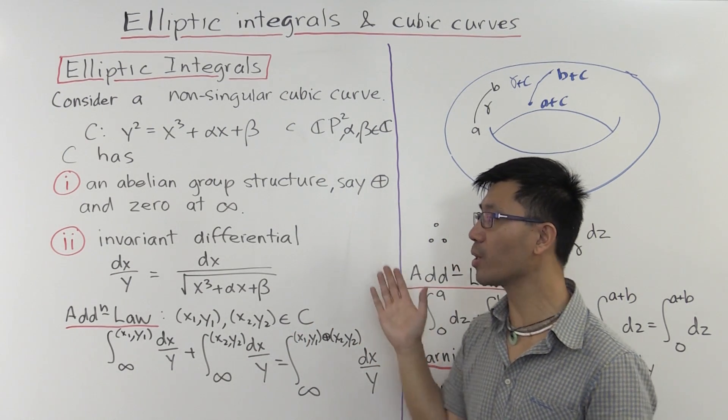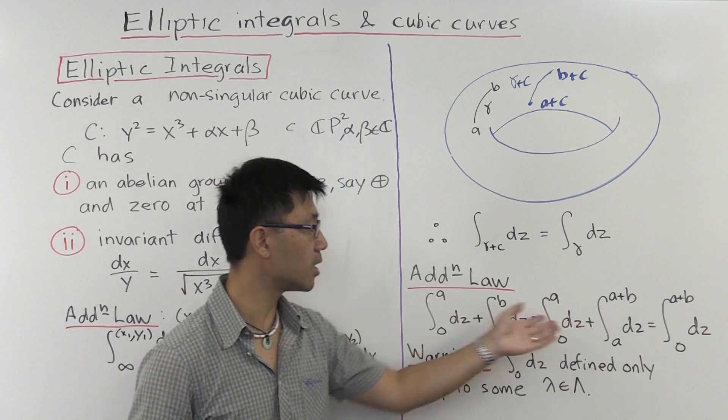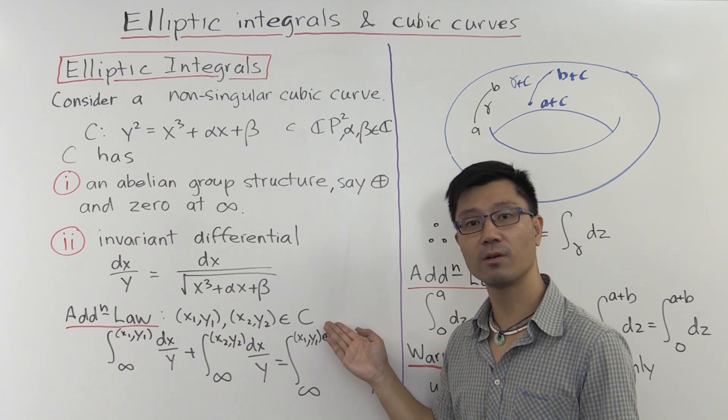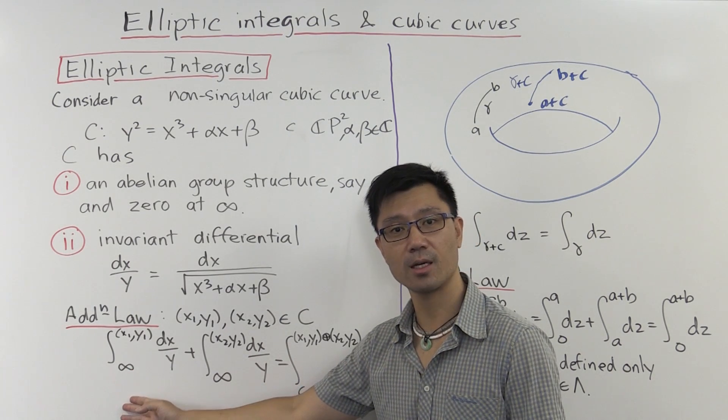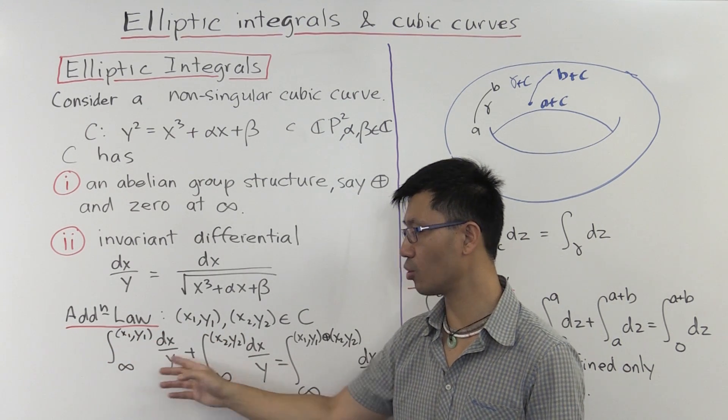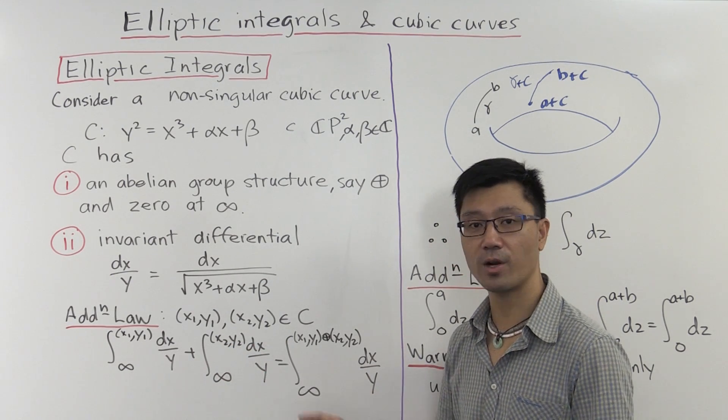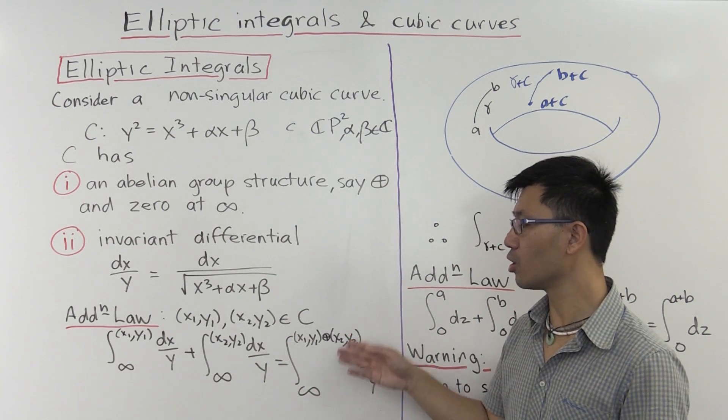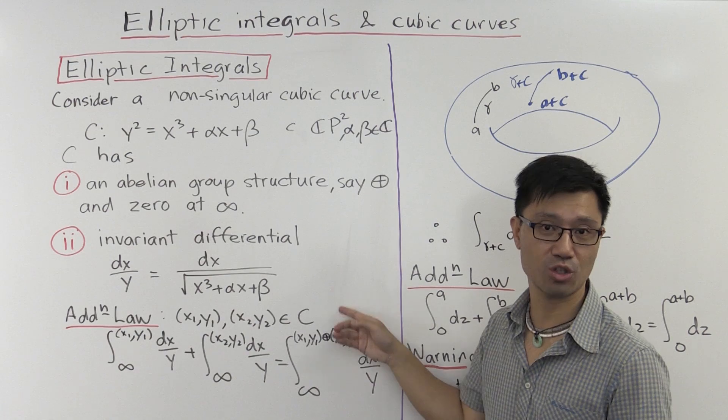So, integrals of this invariant differential just give the elliptic integrals that I mentioned at the beginning of this video. And now we can apply exactly the same argument as we did over here to get a similar addition law. It states that if you pick two points on the curve and you integrate from the zero, which is in this case infinity, up to those points, so infinity to (x₁, y₁), this invariant differential, plus the integral from infinity to (x₂, y₂) of this differential, that's exactly the same as the integral from infinity to the new point that you get by adding these two points together in the group law of this cubic curve.